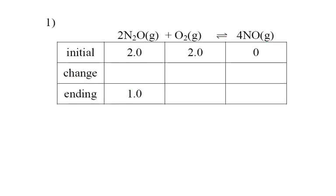Here's another problem. We can see we have 2, 2, and 0. At the end we have 1, so we must have used up 1. I'm going to go through all five of these problems. You've got to try them yourself and then come back and look at this. If I know one of these numbers in my change row, I know them all.